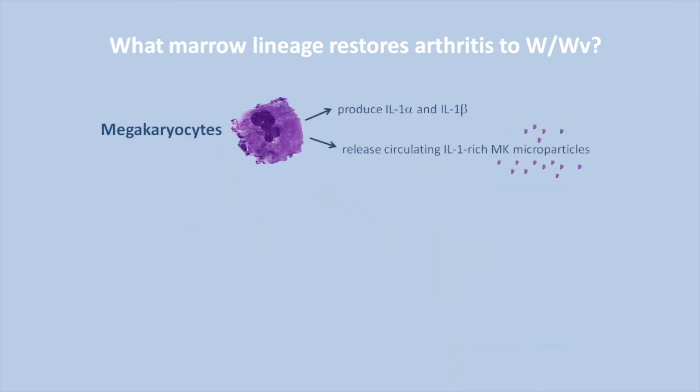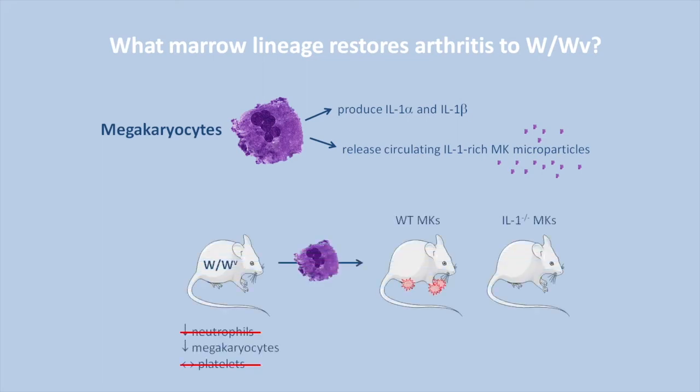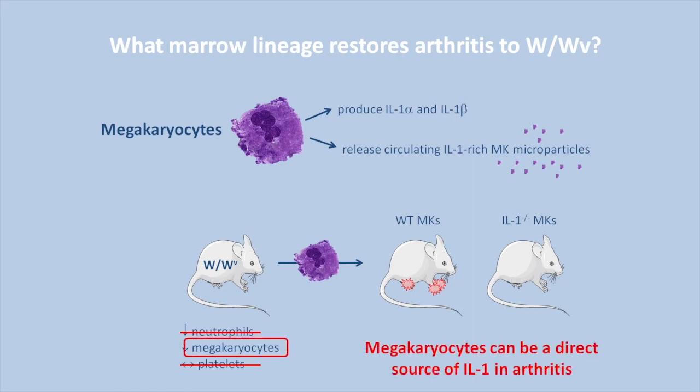These findings suggested that MKs might themselves be the IL-1 donor. Consistent with this possibility, we found that MKs were a rich source of IL-1, including via circulating IL-1-containing MK microparticles. Correspondingly, engraftment of wild-type megakaryocytes restored arthritis even without substantial platelet production, while MKs cultured from IL-1-deficient mice did not. We conclude that megakaryocytes can serve as a direct donor of IL-1 in arthritis, potentially via pro-inflammatory MK microparticles.